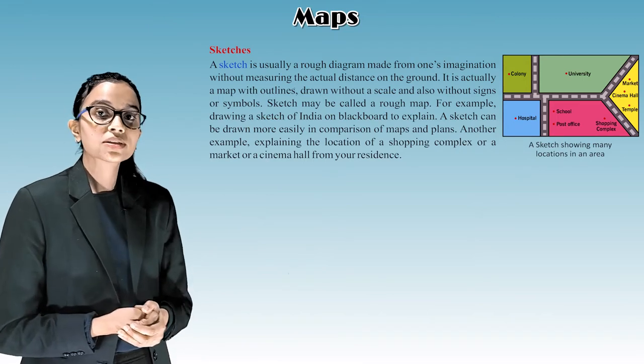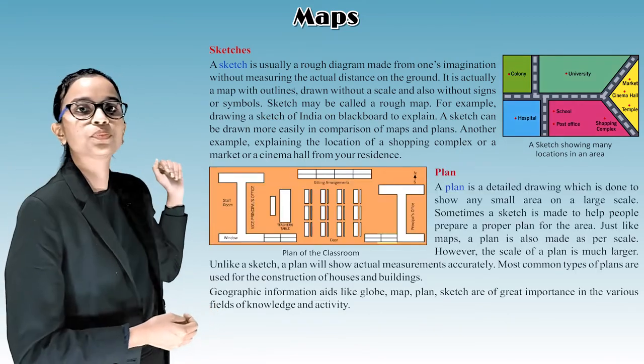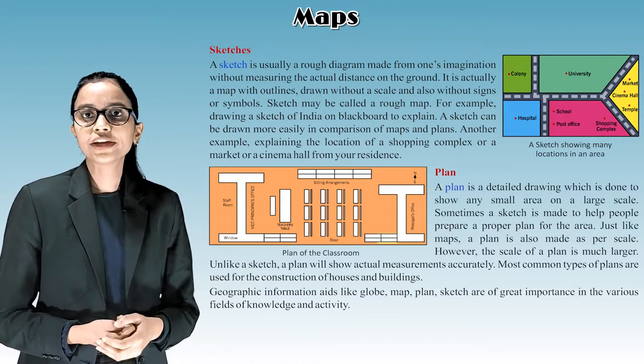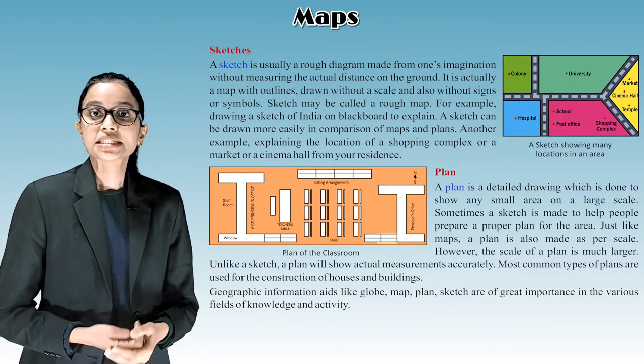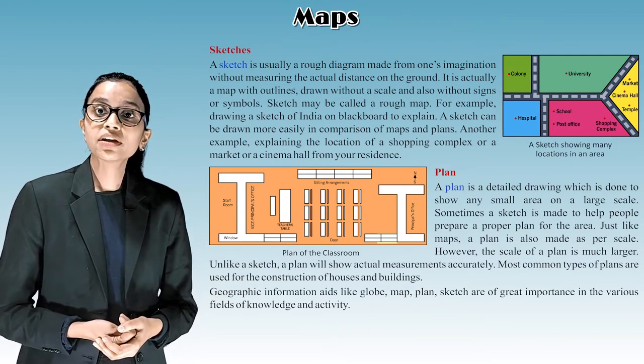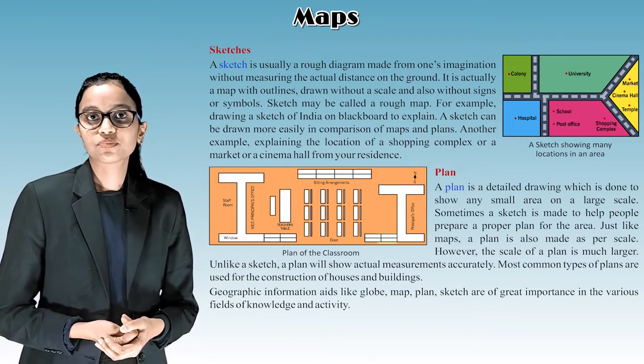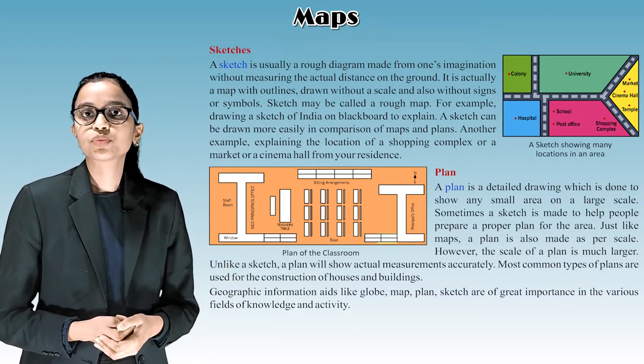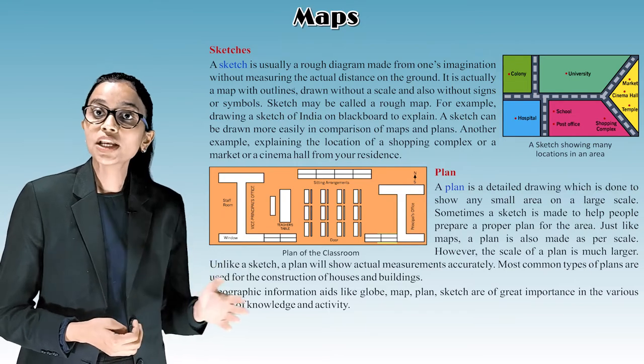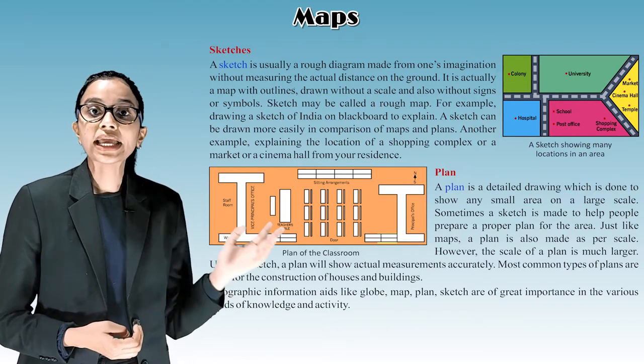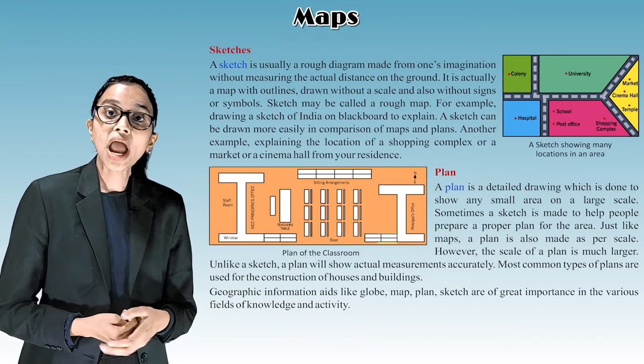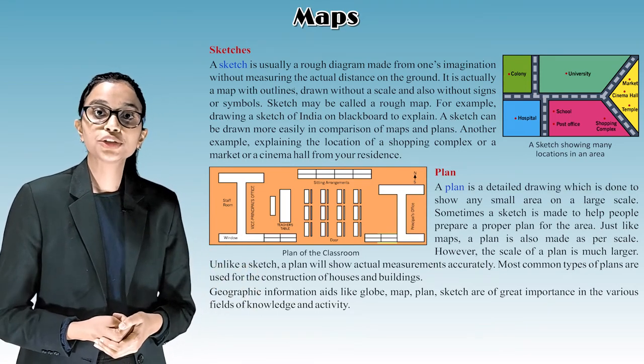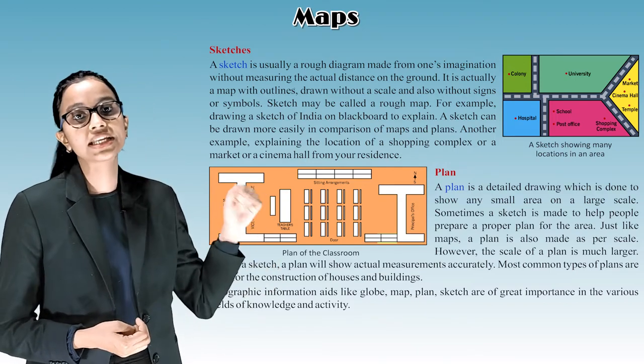Now we are moving towards the plan. A plan is a detailed drawing which is done to show any small area on a large scale. Sometimes, a sketch is made to help people prepare a proper plan for the area. Just like a map, a plan is also made as per scale. However, the scale of a plan is much larger. Unlike a sketch, a plan will show actual measurement accurately. Most common types of plans are used for the construction of houses and buildings.